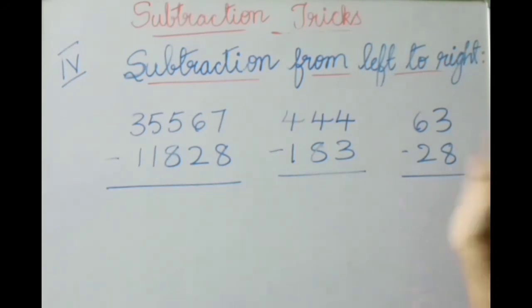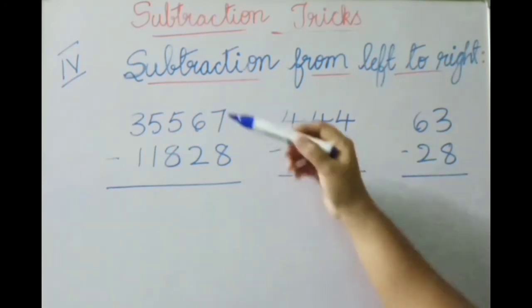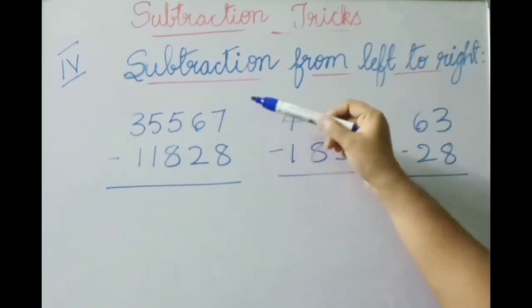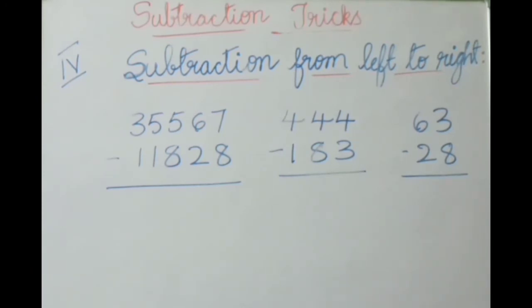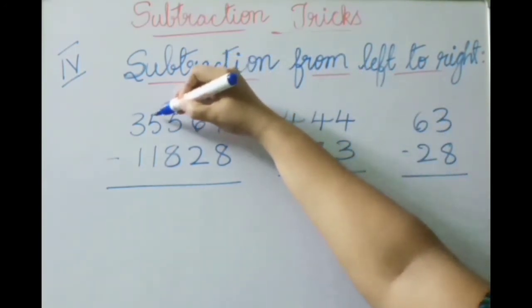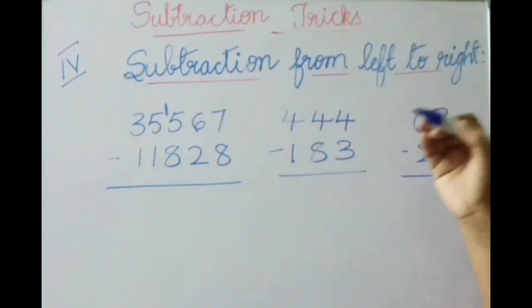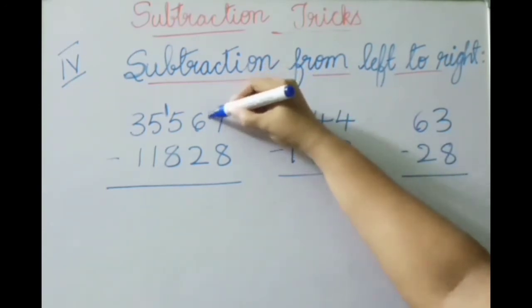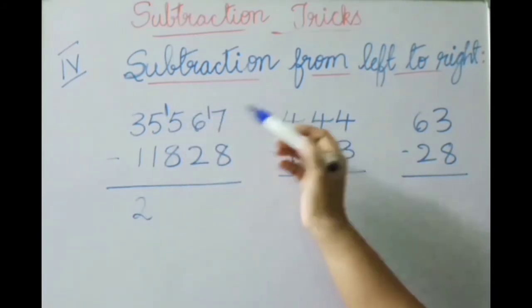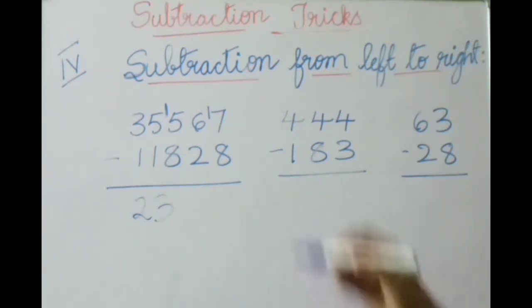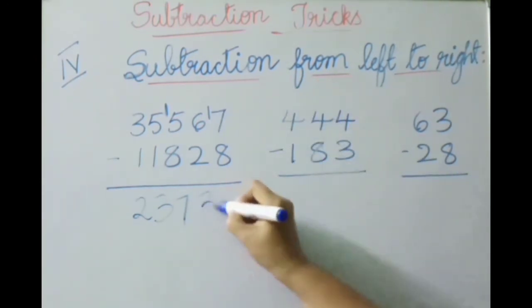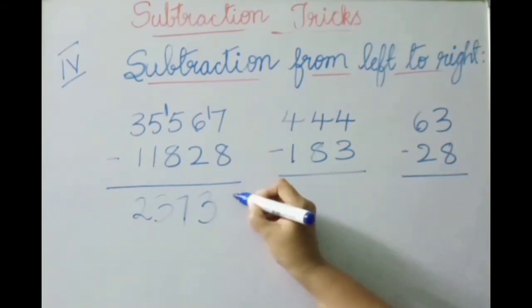Left to right subtraction can also be done with borrowing. Here, eight cannot be subtracted from five, and also from seven we cannot subtract eight. So we take a borrow from the previous number. From this five, taking a borrow makes it fifteen; from this six, taking a borrow makes it seventeen. Now: three minus one is two; four minus one (borrow given) is three; fifteen minus eight is seven — wait, next one gave a borrow, so five minus two is three; seventeen minus eight is nine.